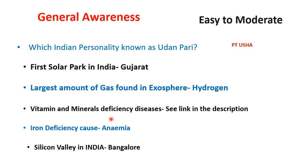Vitamins and minerals deficiency diseases से related questions आये थे। I'll give you a video link in the description. Vitamin B1 की deficiency से क्या होता है? Beriberi. Vitamin C का other name क्या है? Ascorbic acid. Vitamin C की deficiency से क्या होता है? Scurvy. इस तरीके के questions हर competitive exam के लिए important होते हैं। Iron deficiency disease — iron की deficiency से कौन सी disease होती है? Anemia.